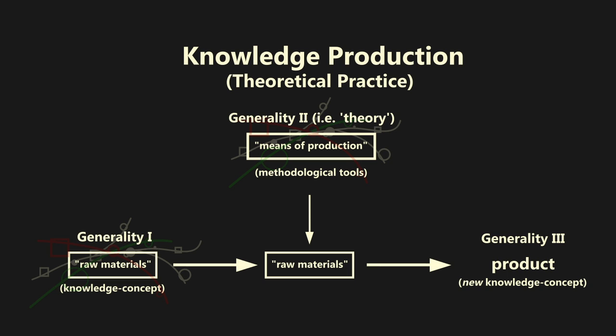In other words, this metabolic process that transforms generality one into generality three works on concepts. Specifically, it works on transforming ideological concepts into scientific ones. The metabolism works through the application of generality two, the theory in quotations of a science, its methodological structures, and the conceptual limits those structures necessarily entail, to generality one.